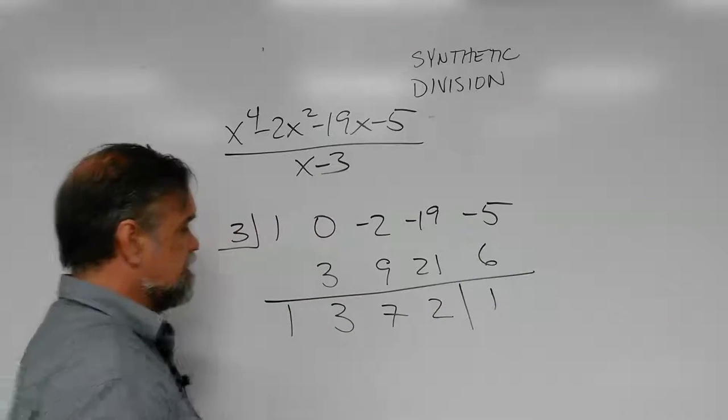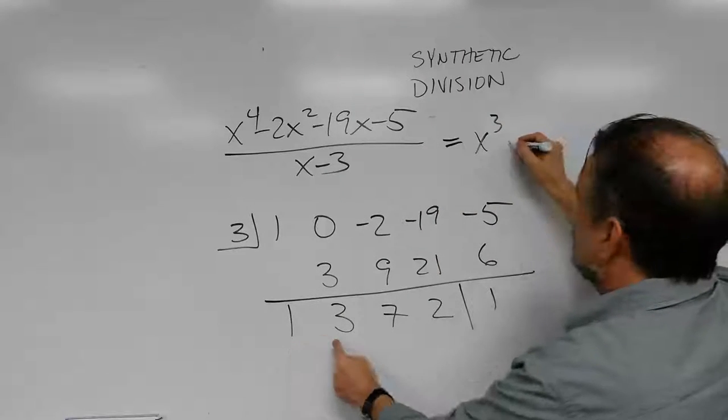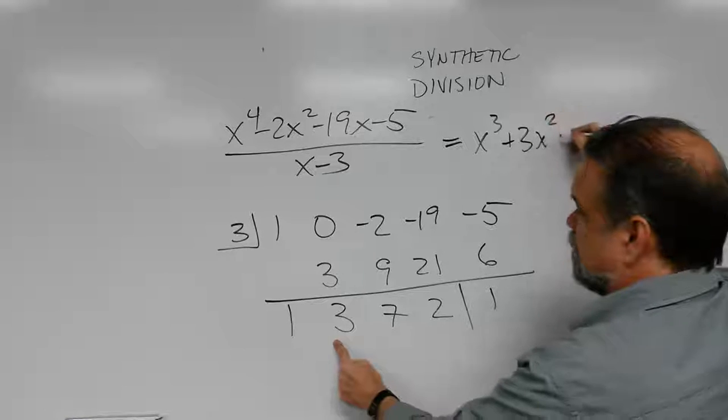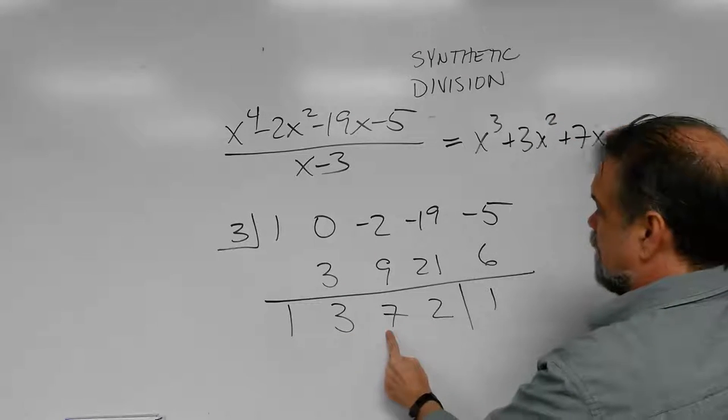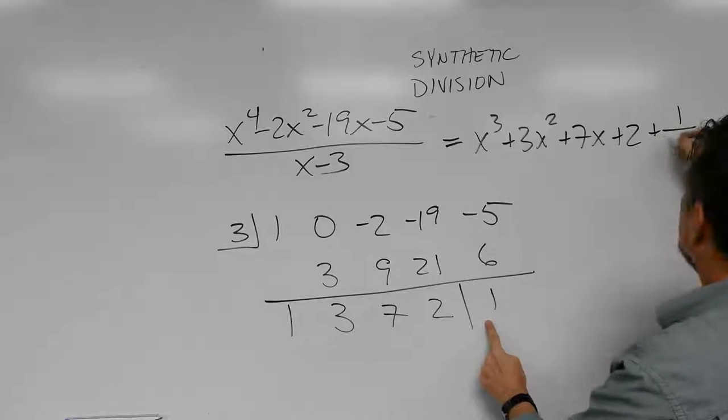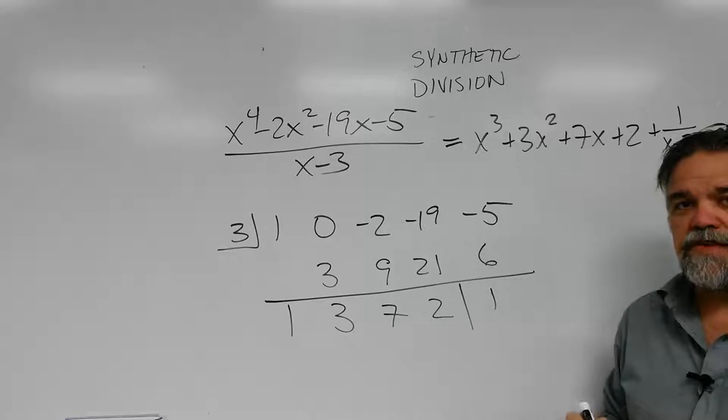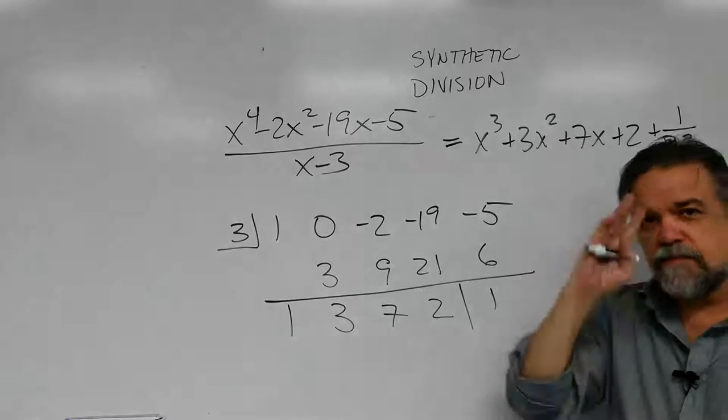And what does that mean? It means I have 1x cubed plus 3x squared plus 7x plus 2 plus 1 over x minus 3. And we're done. Hope this helps. And I'll see you at the next video. Bye-bye.